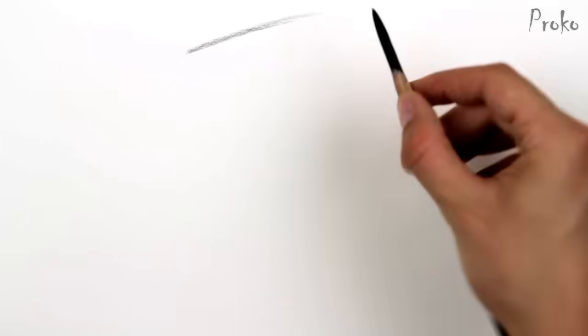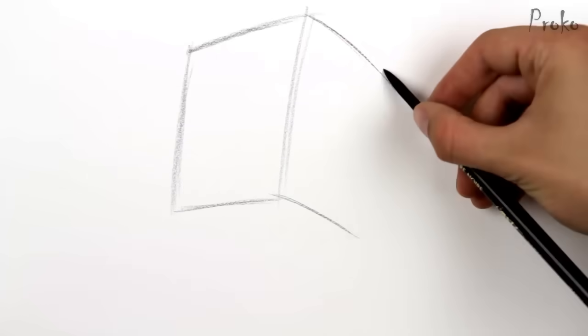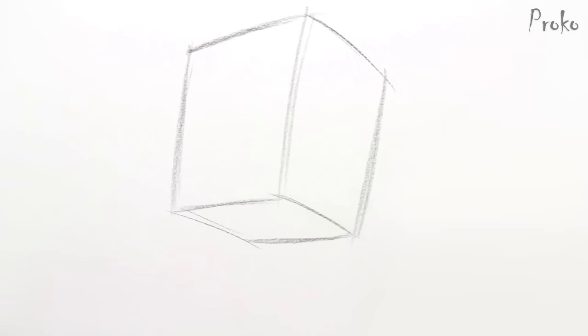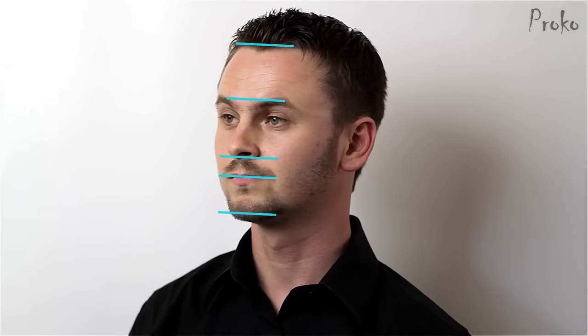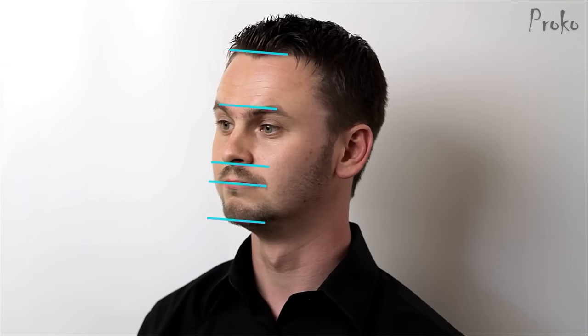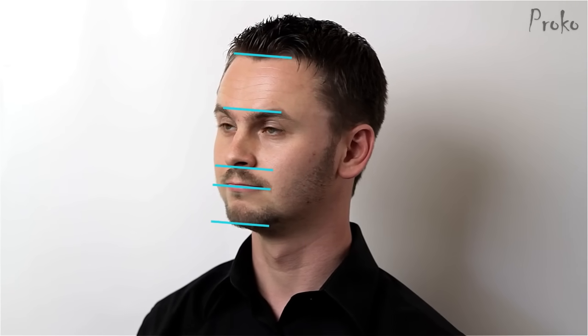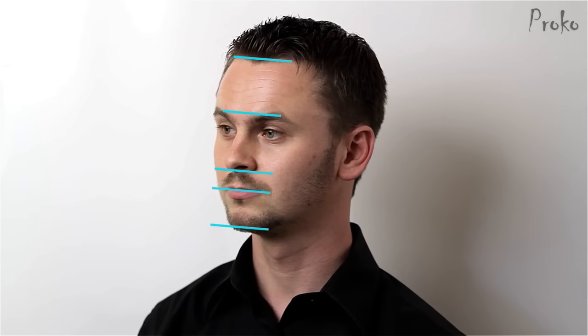This approach is really good to establish the perspective of the head. A good exercise is to try to think about the head as a simple elongated box. The angles on the front plane of the face, such as hairline, brow line, nostrils, lips, and chin, will be the same as the angles on the front plane of the box.